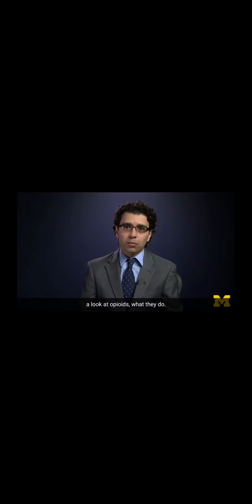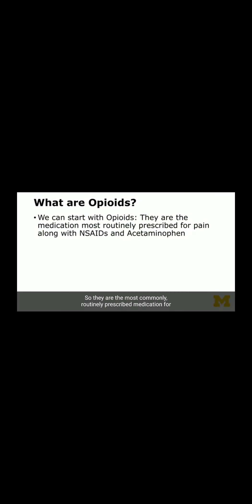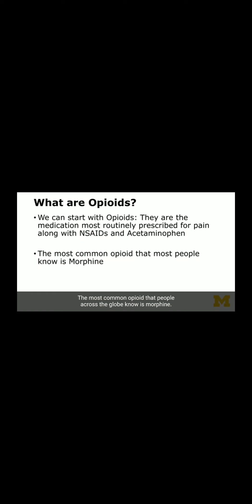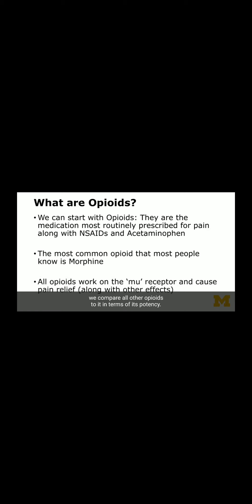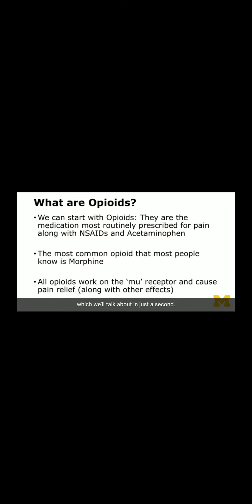Now that we've taken a deeper look at pain states, let's look at opioids and what they do. They are the most commonly routinely prescribed medication for pain, along with NSAIDs — your ibuprofen and Aleve — and acetaminophen, your over-the-counter Tylenol. The most common opioid people across the globe know is morphine, which I call the granddaddy of all opioids. All opioids work on the mu receptor and cause pain relief, along with many other effects.